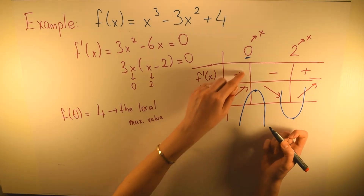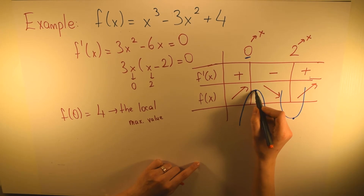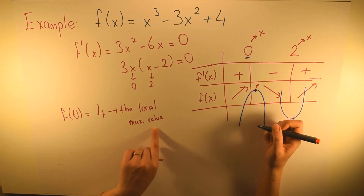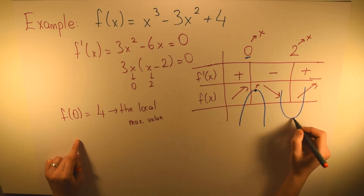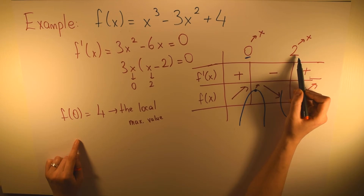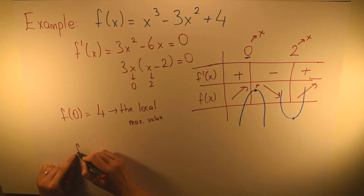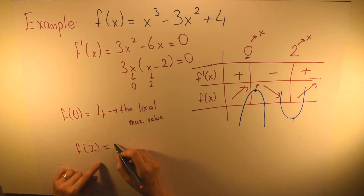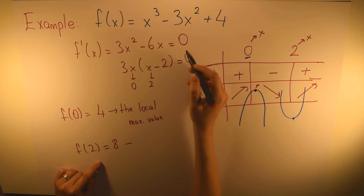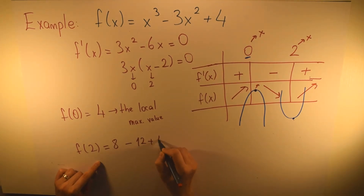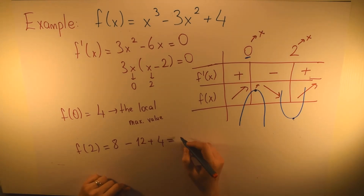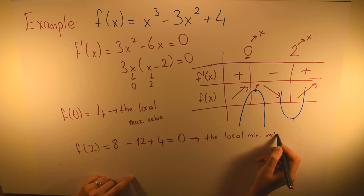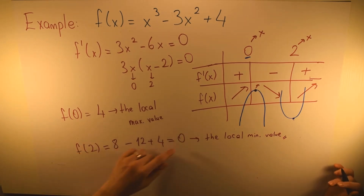When x equals 0, the function is increasing and after that it is decreasing, so the curve shows a maximum value. This point gives us our local maximum value. For the local minimum at x = 2: f(2) = 2³ - 3(4) + 4 = 8 - 12 + 4 = 0. So 0 is the local minimum value. This is the process you need to follow to get the right answer in these kinds of questions.